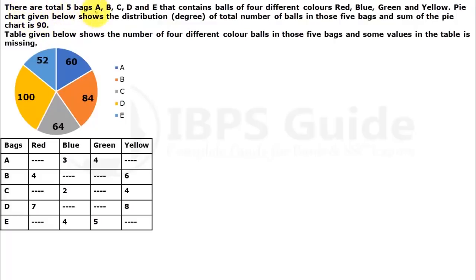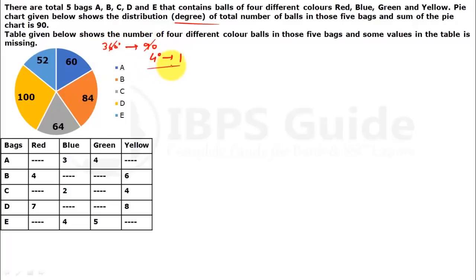So here there are total five bags: A, B, C, D, E. You have five bags and they contain four different colors — red, blue, green and yellow. The pie chart given below shows the distribution in degrees. So this is your degree portion. The total number of all those five bags — the sum of the pie chart is 90. So that is 90 degree, meaning the total value is 360 degrees. The 360-degree value is 90 balls, so 4 degrees equals 1 unit — that is 1 ball.